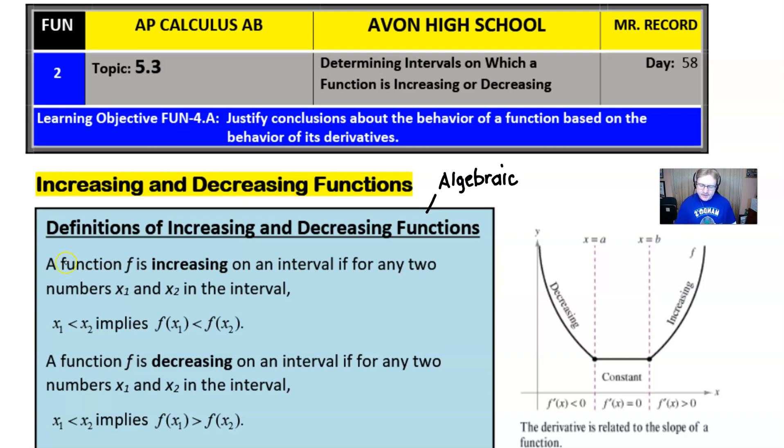Any student who has a basic understanding of probably first year algebra could wrap their heads around this definition fairly easy. It says a function f is increasing on some interval if for any two numbers, let's say x₁ and x₂ that are in that interval, x₁ being less than x₂ implies that the f(x₁) value is less than the f(x₂) value.